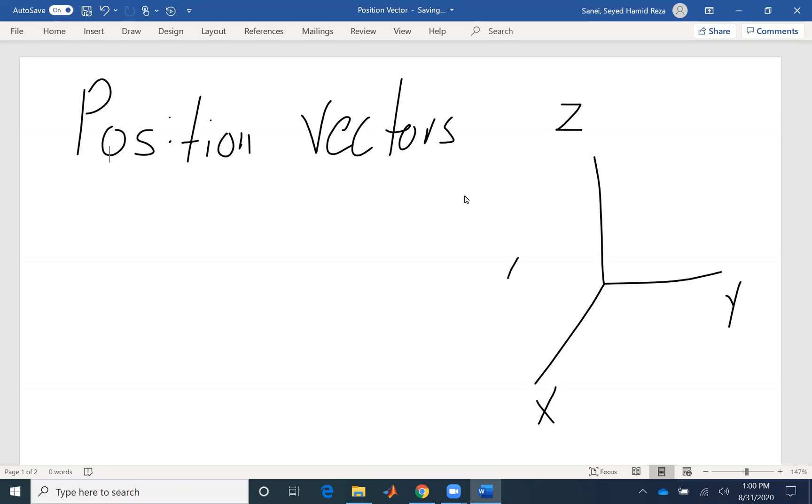Position vector connects two points in our coordinates. So if we are dealing with a three-dimensional coordinate, we have, let's say this point is A. Point A has x-coordinate, y-coordinate, and z-coordinate.